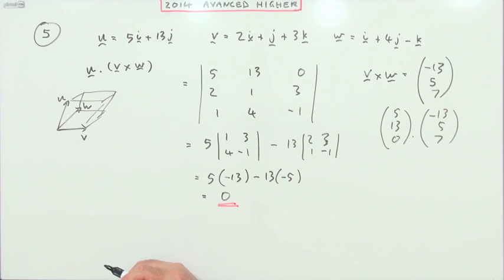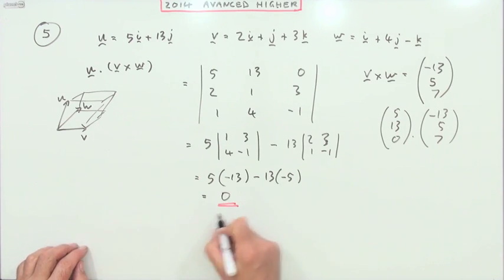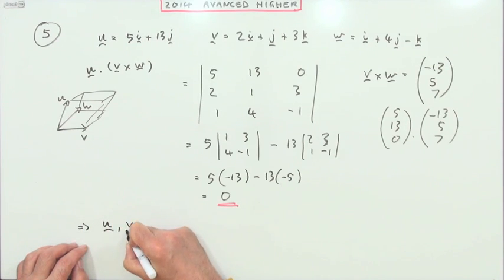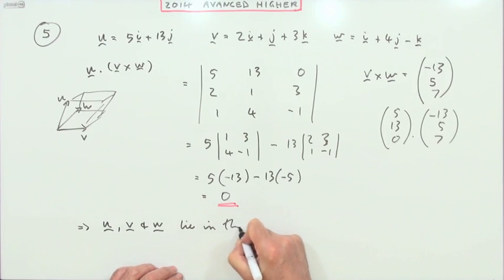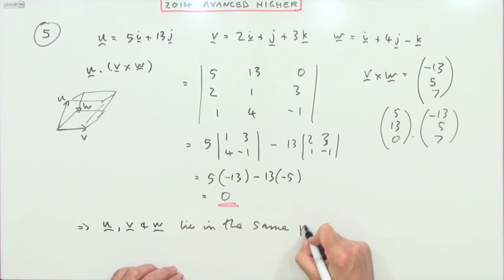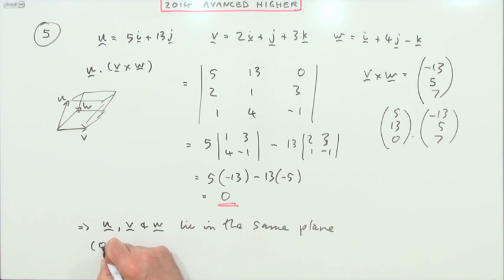Which means that u, v, and w are all coplanar. But they've mentioned OA, OB, and OC, so does that mean that you could say that O, A, B, and C all lie in the same plane? I'll put that down first of all. From that you can say that u, v, and w lie in the same plane, or if you like O, A, B, and C are coplanar.